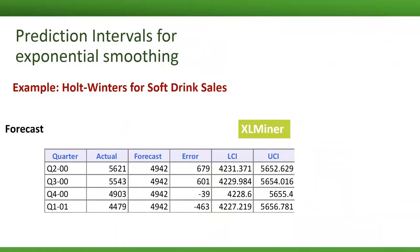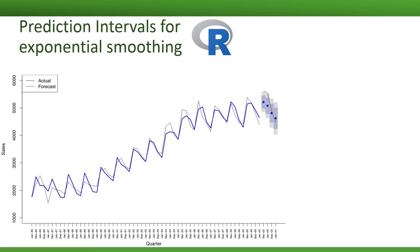Here's an example of prediction intervals for exponential smoothing from three different software packages. Excel provides the upper and lower bounds of a prediction interval in the form of a table. In R, the ETS function automatically generates 80% and 95% intervals, and you can easily plot them.